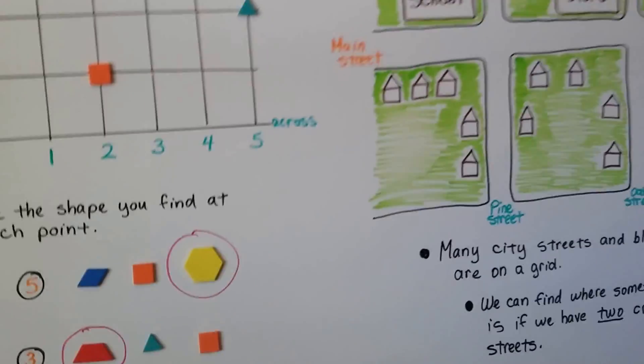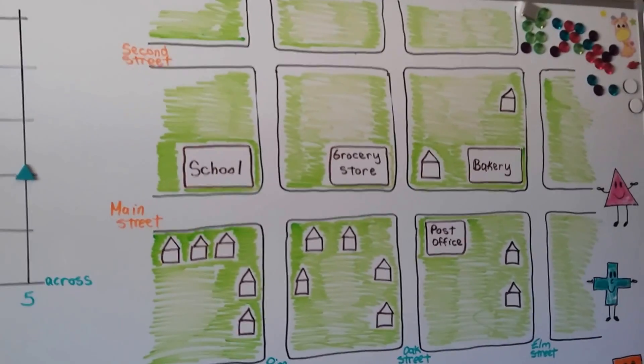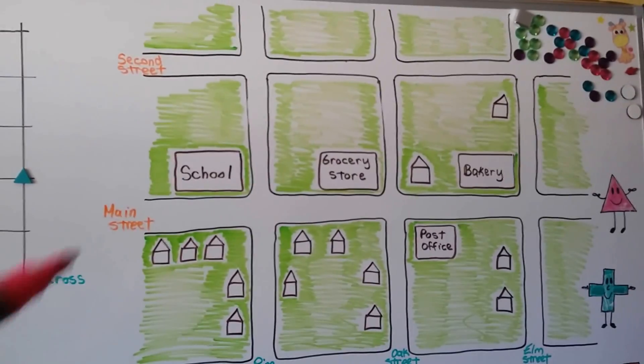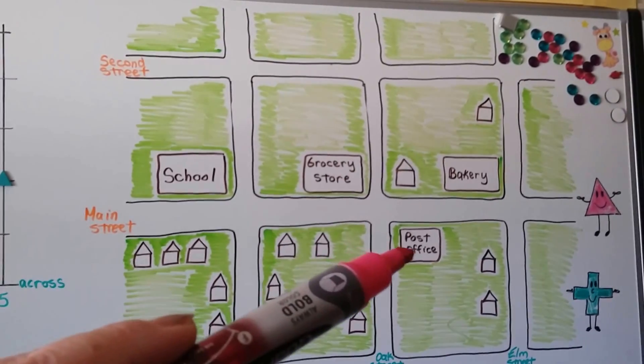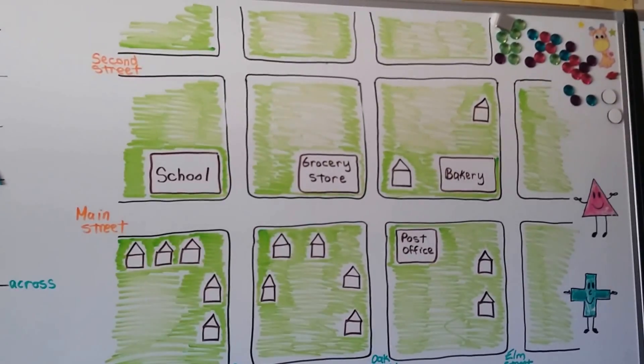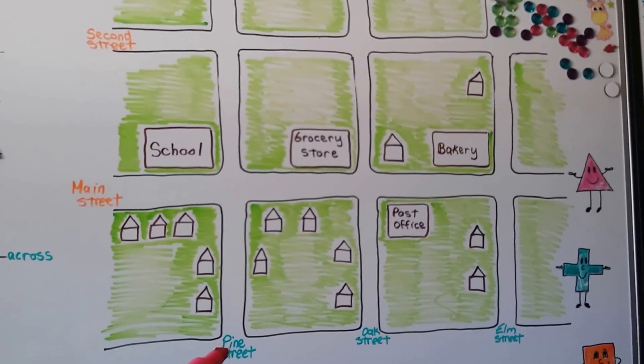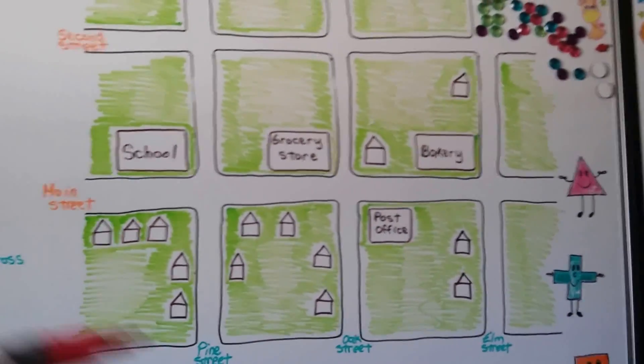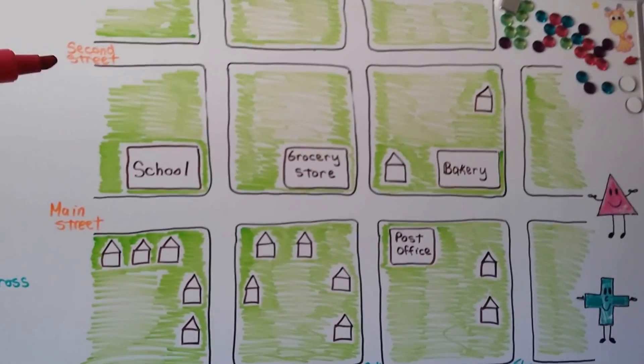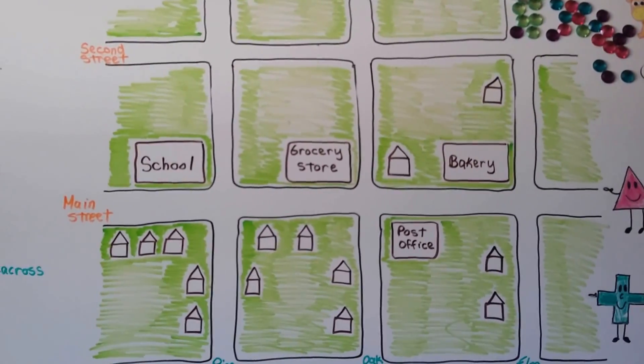Now take a look at this nice drawing I did here. It took me a while. This is a city. You can see we've got a school and some houses, a grocery store, a post office and a bakery and lots of grass. We can also see the streets. Down here we have Pine Street, Oak Street and Elm Street. And right here we have Main Street and 2nd Street.